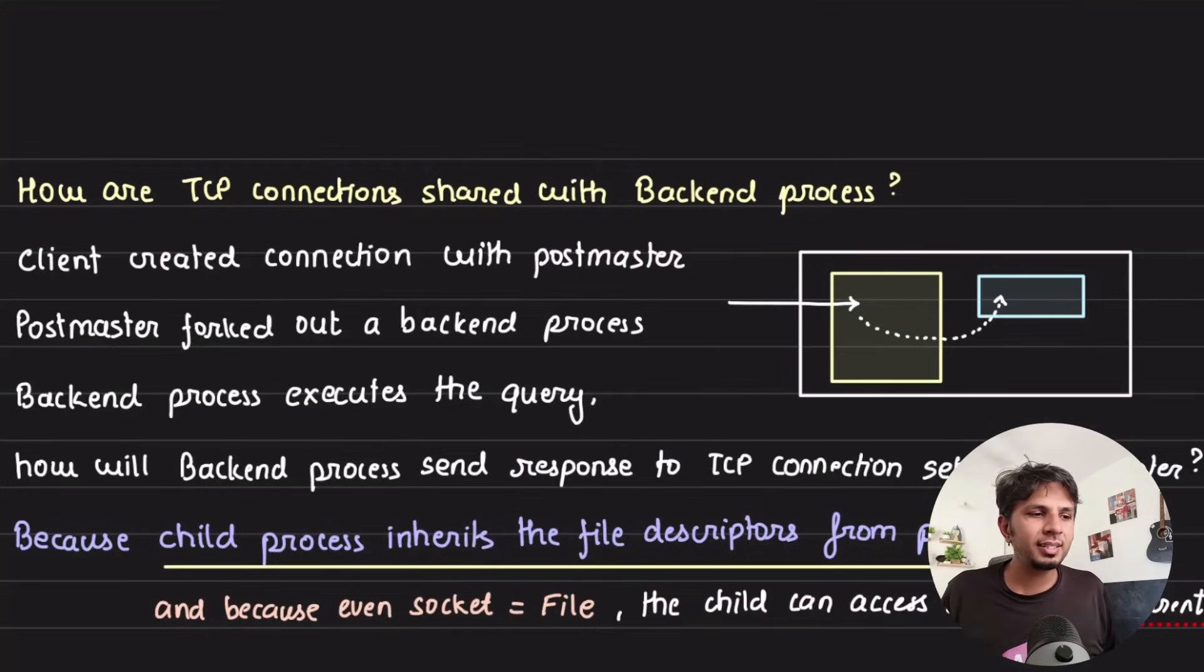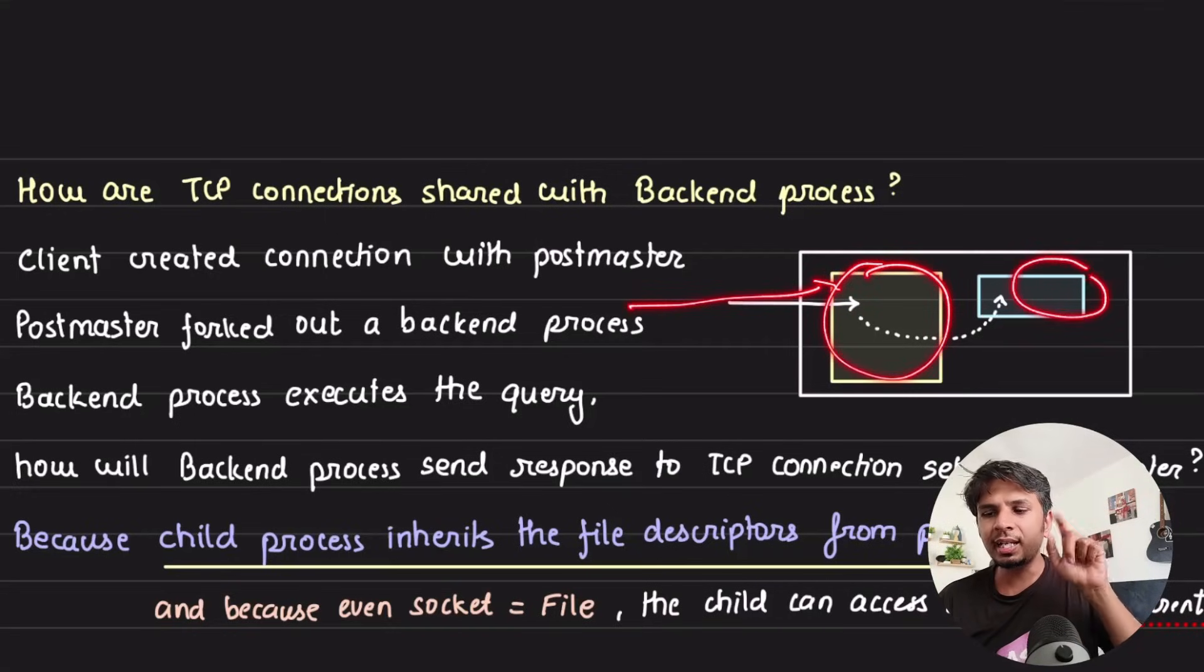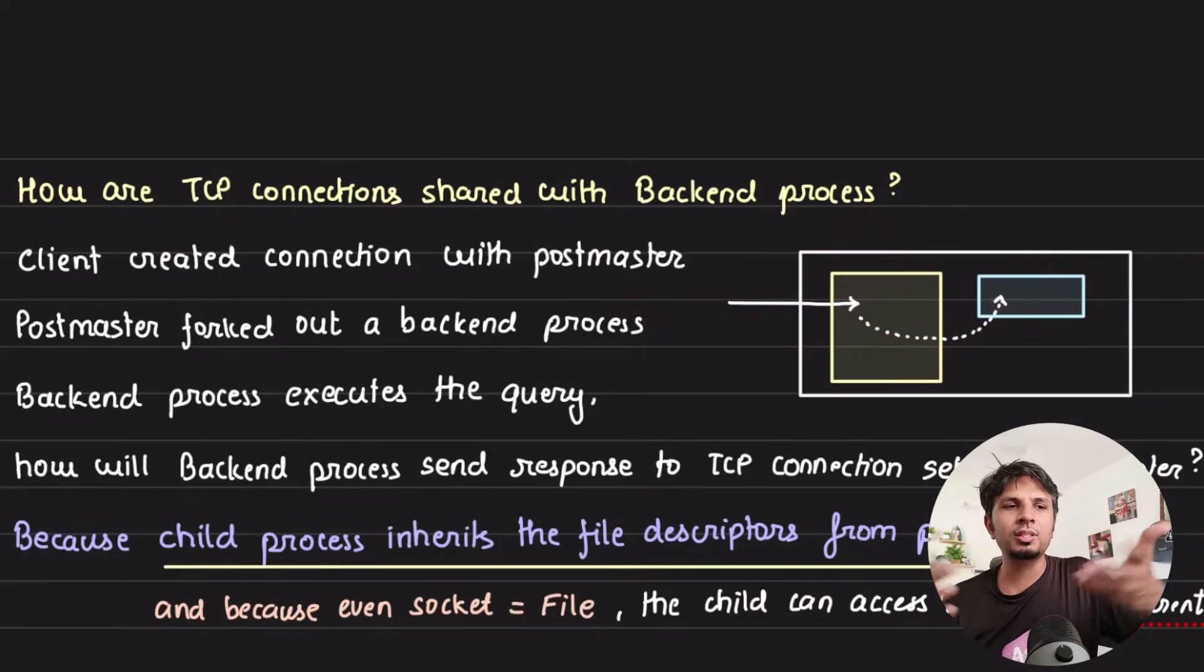But this takes us to an interesting question. The interesting question is: because now my TCP connection was set up to postmaster process, I created a child process for that. How is my child process able to access the TCP connection that is created with the postmaster process? Like, processes are supposed to be isolated. How does this work?